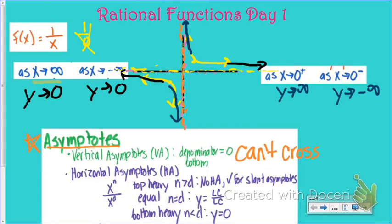If our degrees are equal — for example, x squared minus x plus 1 over 3x squared — those are both degree 2, so the horizontal asymptote is the leading coefficient over the leading coefficient. The leading coefficients are 1 and 3, so the horizontal asymptote would be y equals 1 third. In the last case, if the equation is bottom-heavy — say, x to the fourth over x to the fifth minus 3x squared — then the horizontal asymptote is y equals 0.